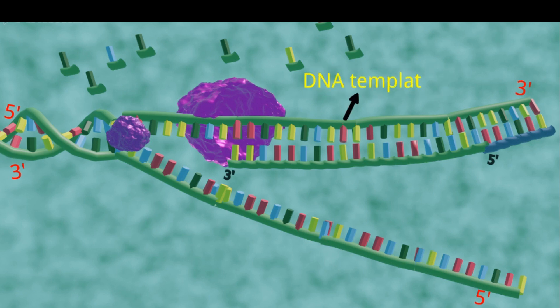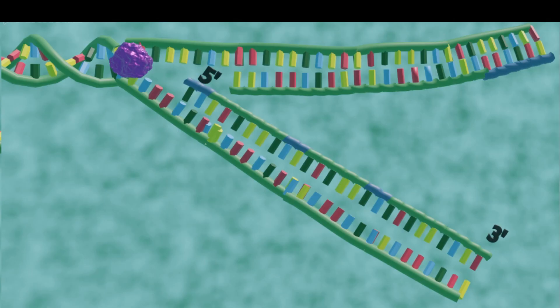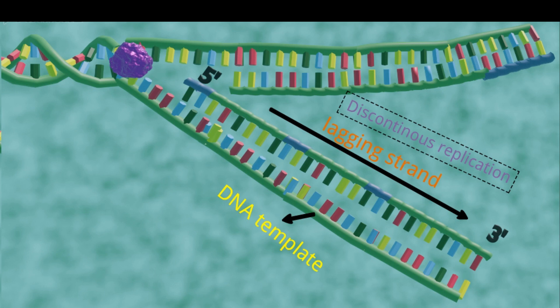Replication on one of the DNA templates occurs forming the leading strand towards the replication fork in the 5' to 3' direction. This type of replication is known as continuous replication. The other DNA template is anti-parallel, so replication occurs away from the replication fork, forming the lagging strand. This type of replication is known as discontinuous replication.